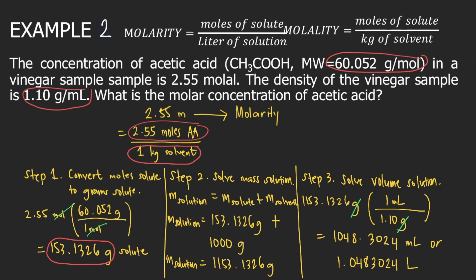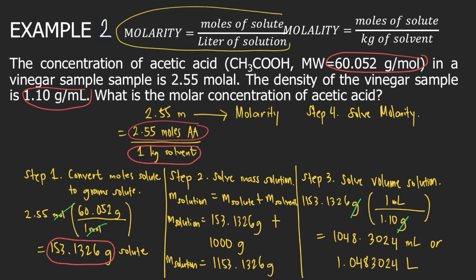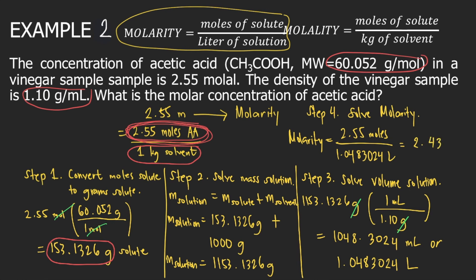Now that we have the liters of solution, the final step, step 4, is to solve for molarity. Using the formula, molarity equals moles of solute divided by liters of solution. We have 2.55 moles of acetic acid divided by 1.0483024 liters, which equals 2.43 moles per liter, or 2.43 molar. This is the final answer to the question.